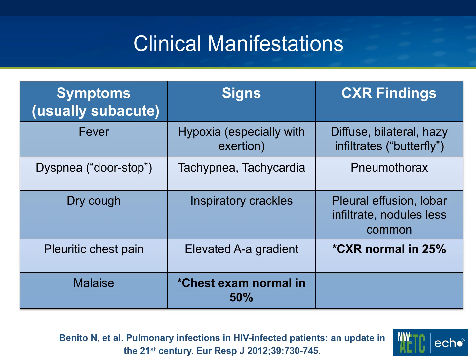The most common signs include hypoxia, especially with exertion. Patients with PCP may not appear hypoxic at rest, but a desaturation of greater than or equal to 5% is an important sign. Other signs include tachypnea and tachycardia. On exam, the most common finding is inspiratory crackles, and an elevated A-a gradient is also an important indicator. Importantly, the chest exam may be normal in up to 50% of people with PCP.